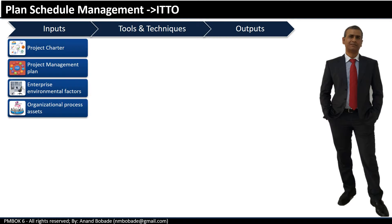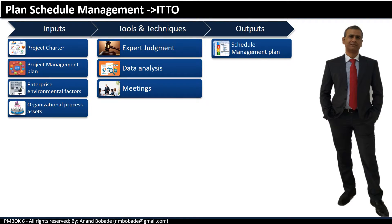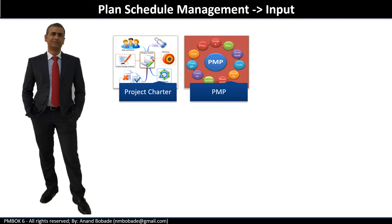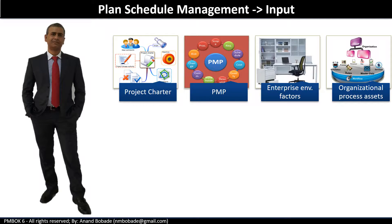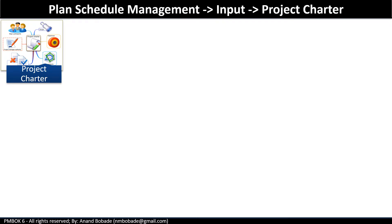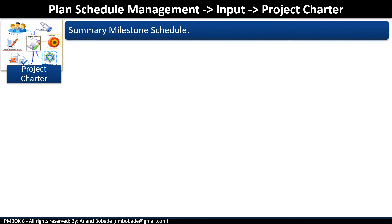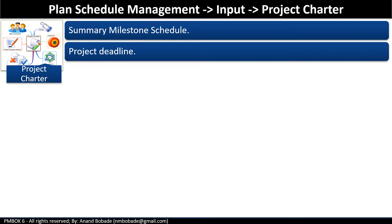Let's look at inputs, tools, techniques, and output. The inputs are: project charter, project management plan, enterprise environmental factors, and organizational process assets. The project charter contains many key elements at a high level — for example, major constraints of scope, schedule, and cost. With respect to schedule, the project sponsor might have specified important milestone dates in a summary milestone schedule. It also includes the project deadline for completion, and this constraint will be kept in mind while creating the schedule management plan.